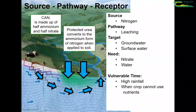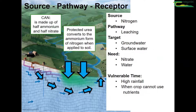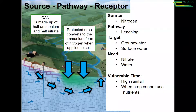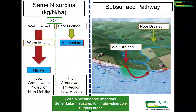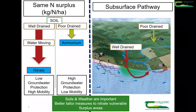Vulnerable times for nitrogen leaching are when you get high rainfall combined with a free-draining or moderately drained soil type. Of course, when the nitrogen isn't being used by the plant towards the end of the year and the start of the year in particular, you get high rainfall, the nitrate is sitting there, it washes through the soil and you get nitrate leaching. So soils, weather, and the source of nitrogen are all important, and we need to better tailor measures to our nitrate vulnerable and nitrate surplus areas.